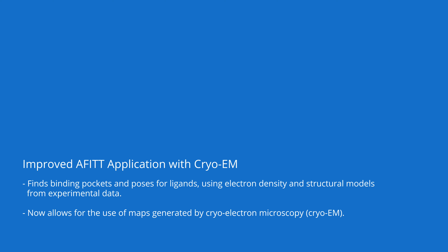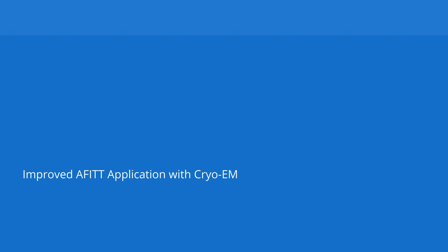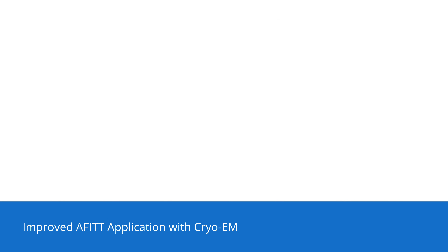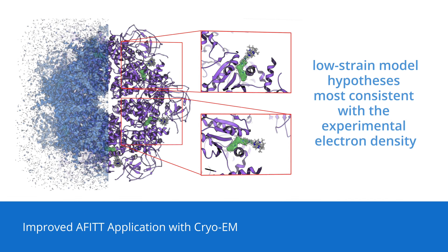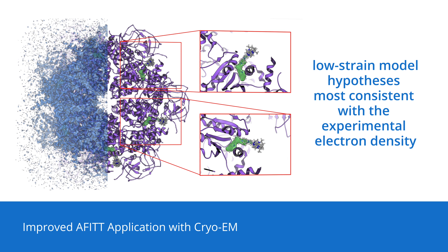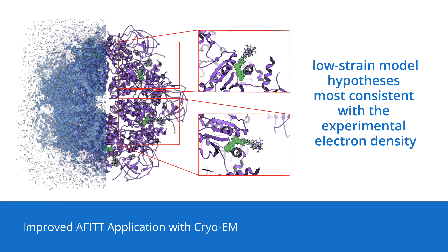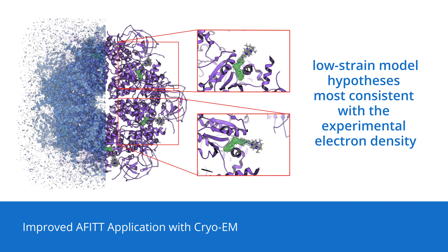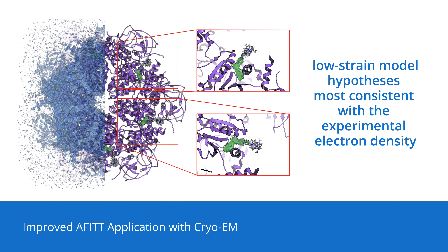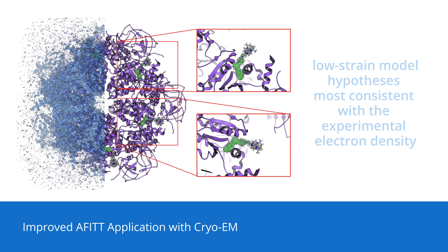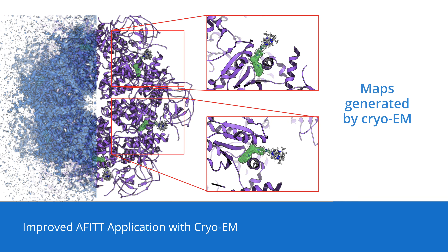AFIT generates an ensemble of low-strain model hypotheses most consistent with the experimental electron density. In this release, we've updated AFIT to enable researchers to access the same powerful insights from maps generated by cryo-electron microscopy.